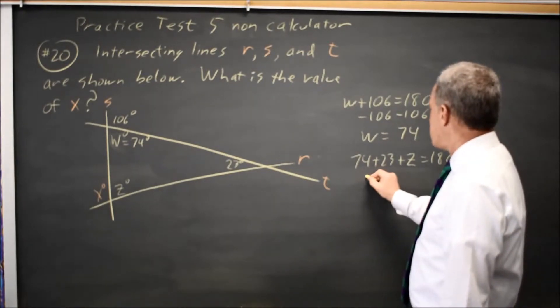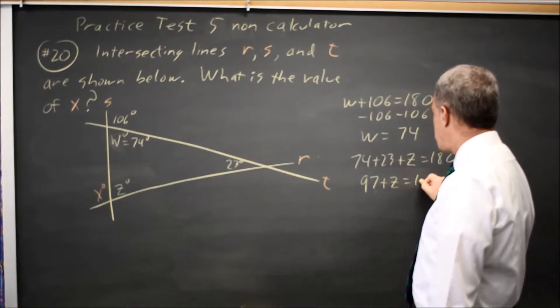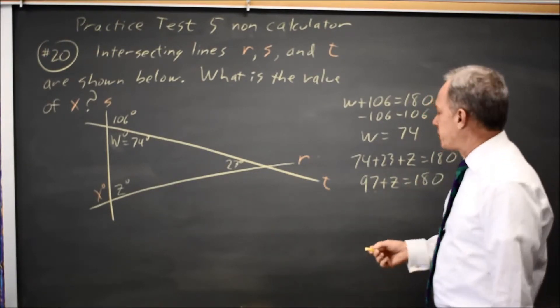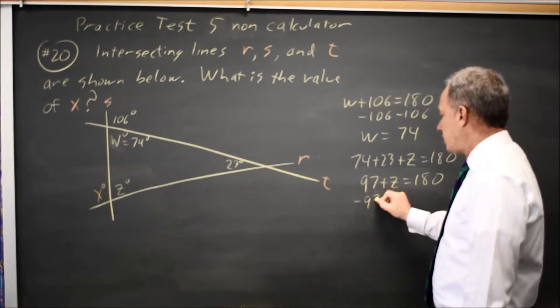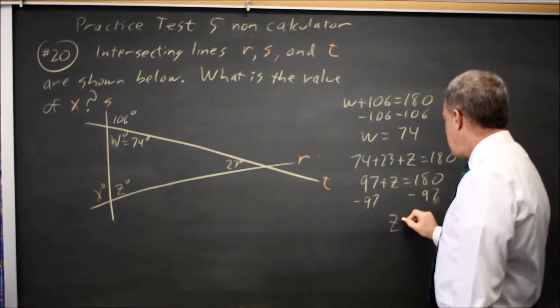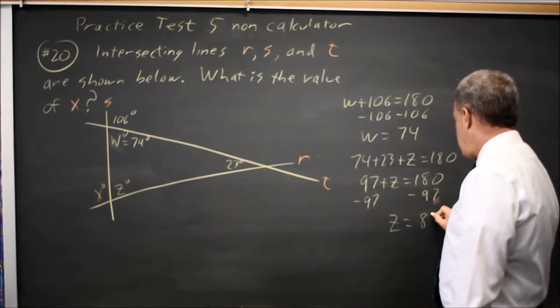So that is 97 plus Z equals 180. I could solve for Z, and I probably would because I wouldn't be looking ahead far enough on the test. Z equals 83.